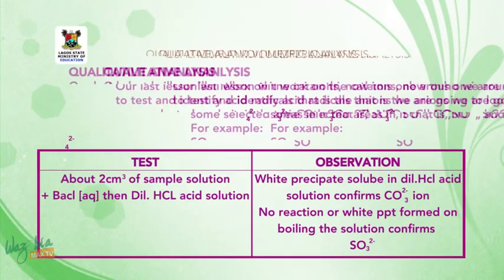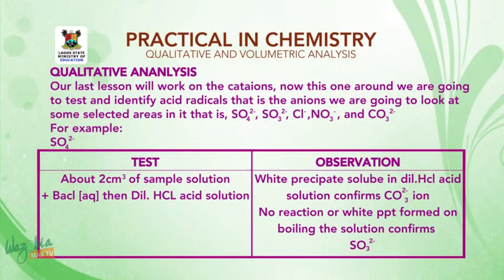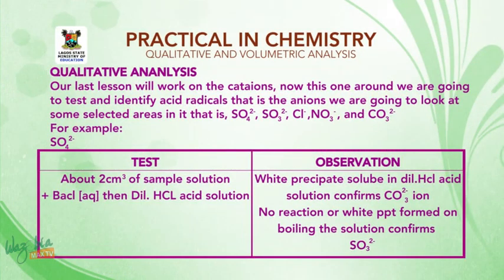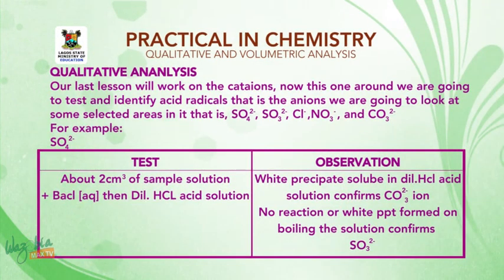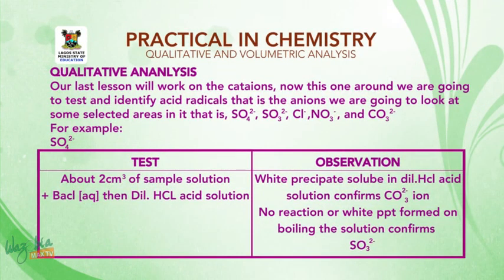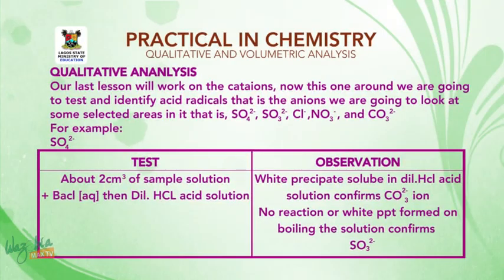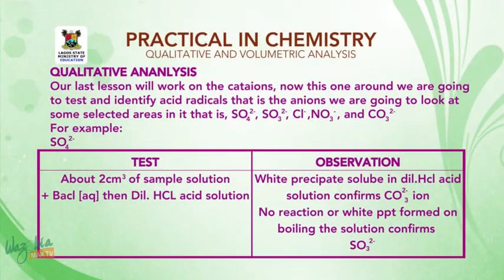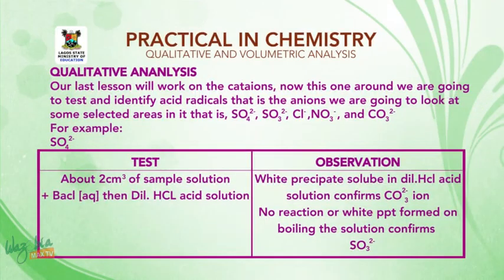In our last lesson we worked on the cations. This time we are going to test and identify acid radicals — that is, the anions. We are going to look at some selected anions: SO₄²⁻, SO₃²⁻, Cl⁻, and CO₃²⁻.